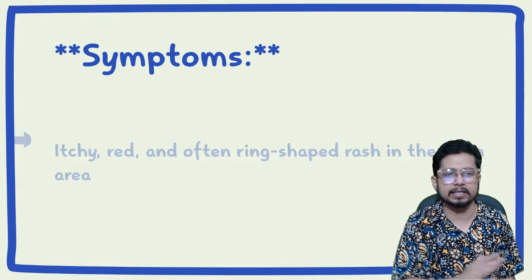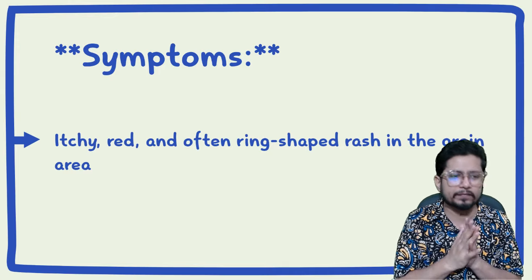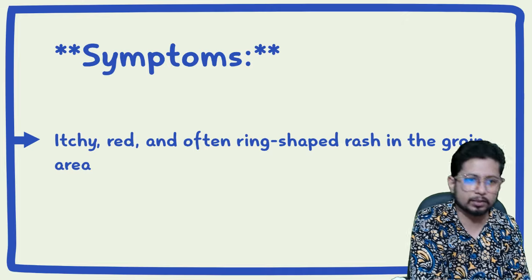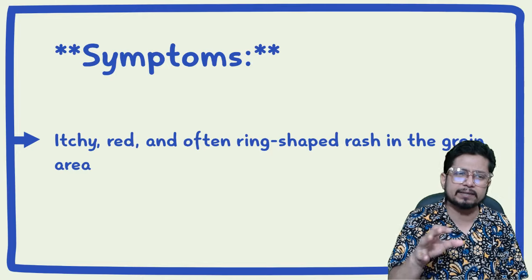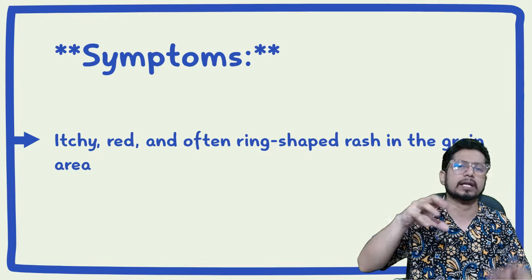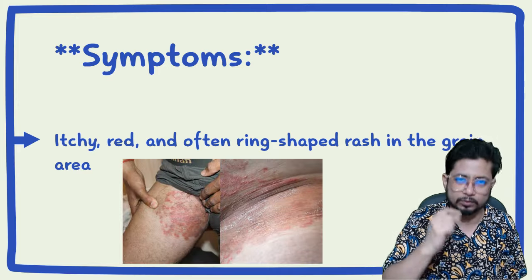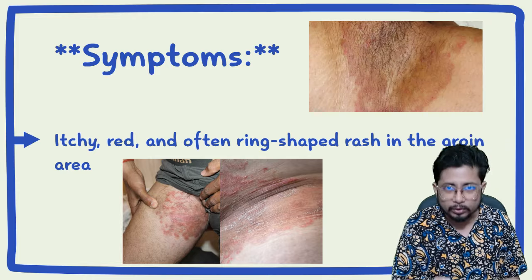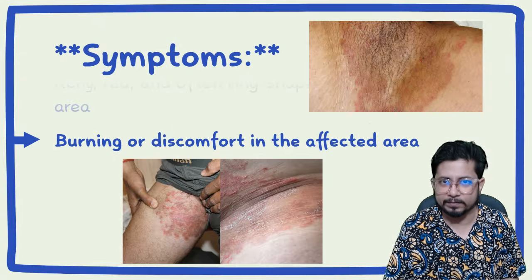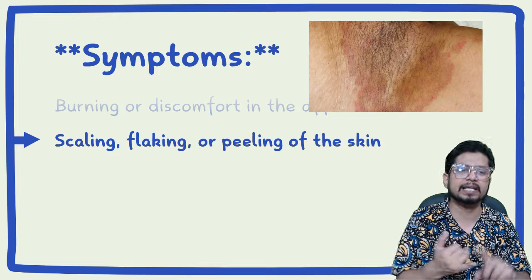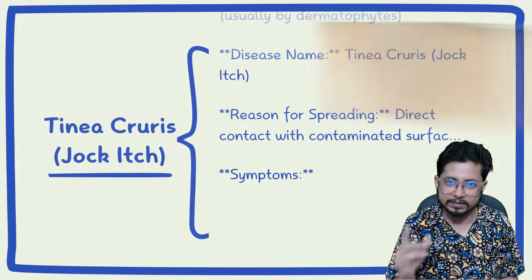As visible in the background image, the symptoms include an itchy, red, and often ring-shaped rash in the groin area — sometimes referred to as a ringworm infection. Both ringworm and tinea cruris are caused by dermatophyte fungi, and they are very similar, but tinea cruris is specifically located in the groin area. Additional symptoms include burning or discomfort, as well as scaling, flaking, or peeling of the skin in the infected area.